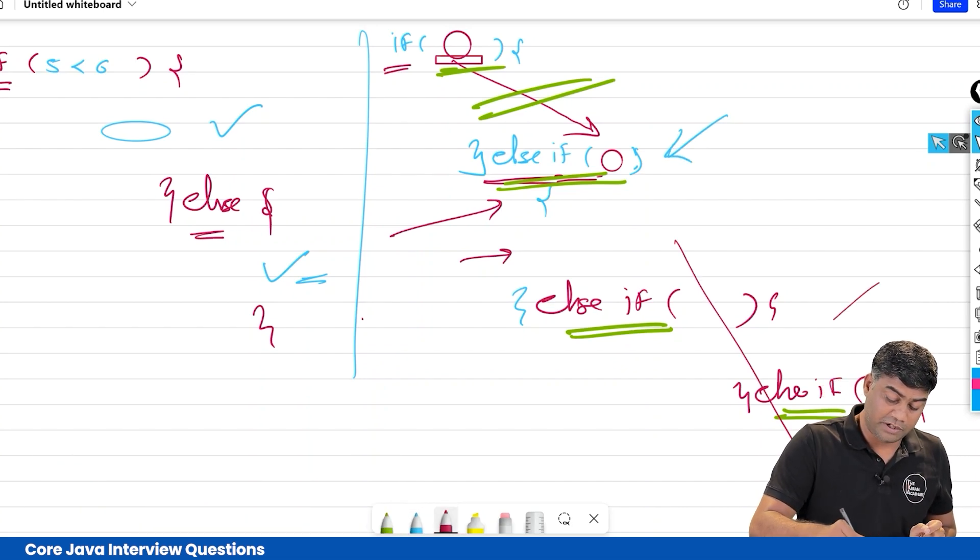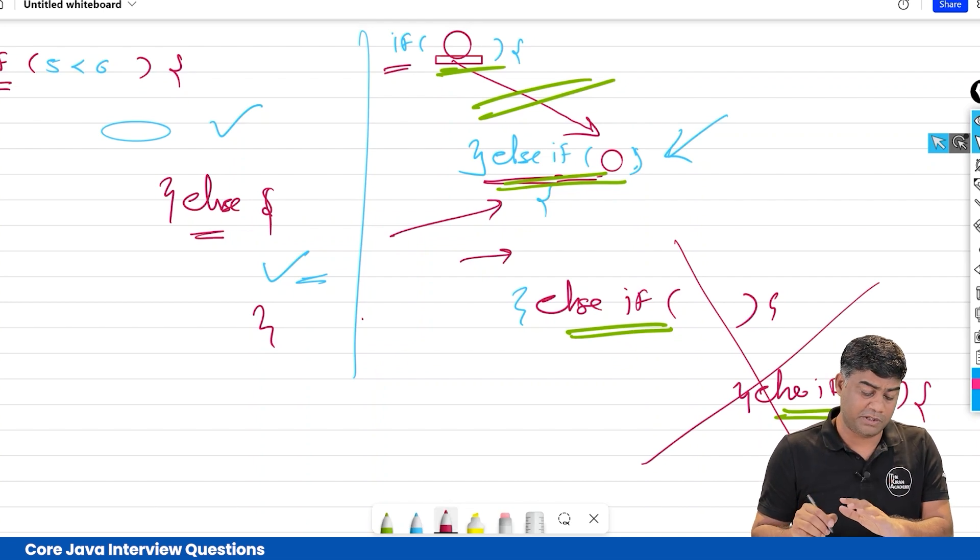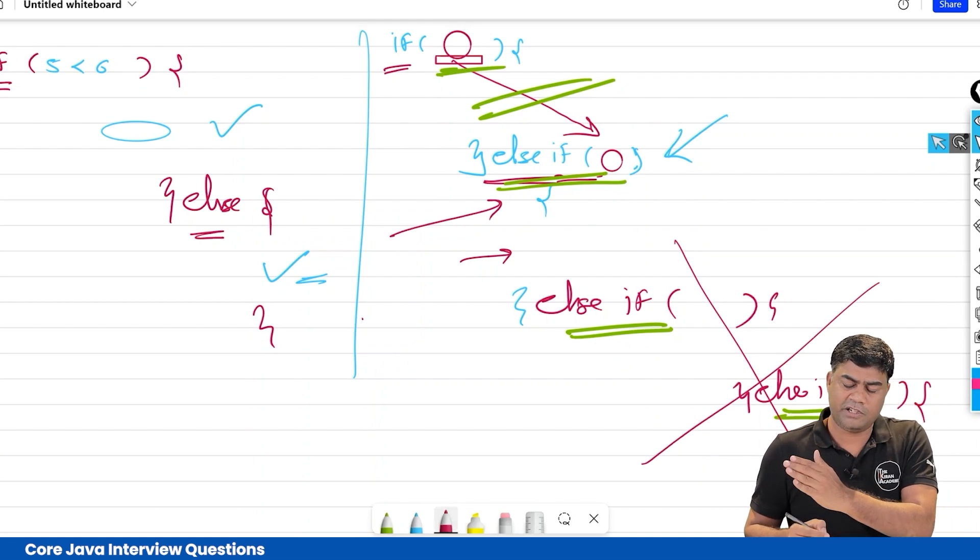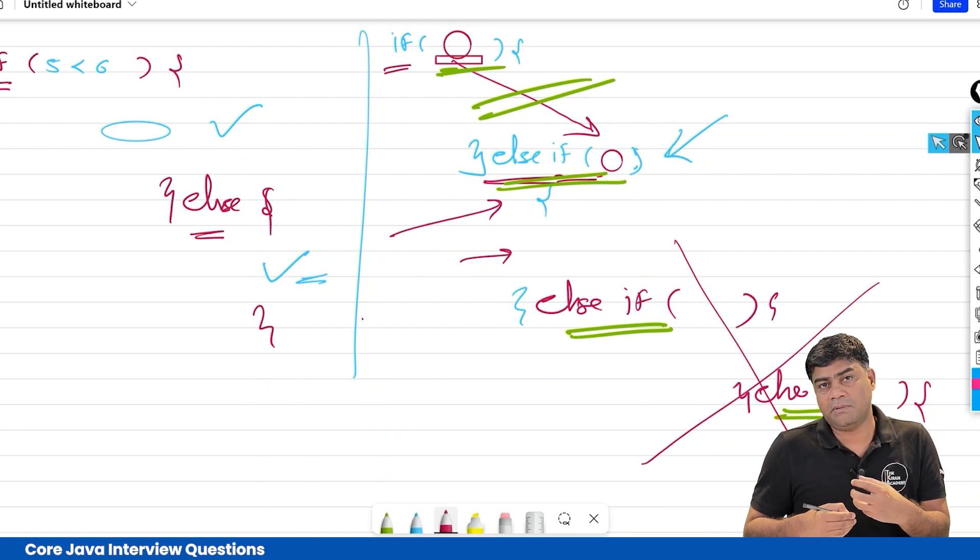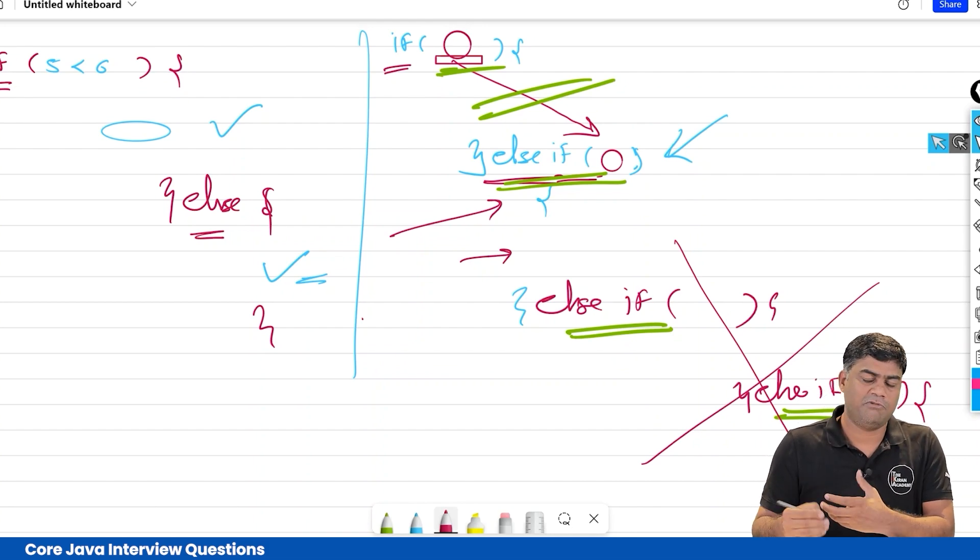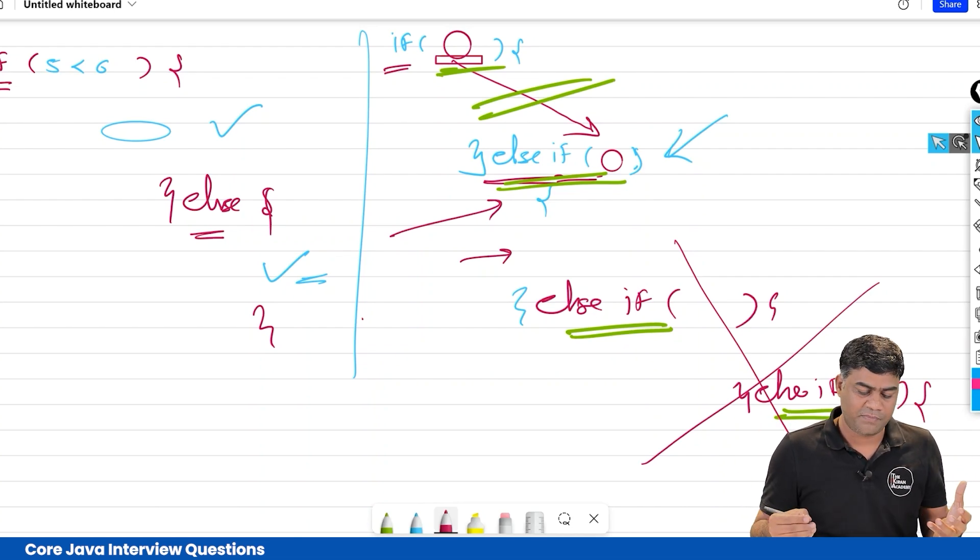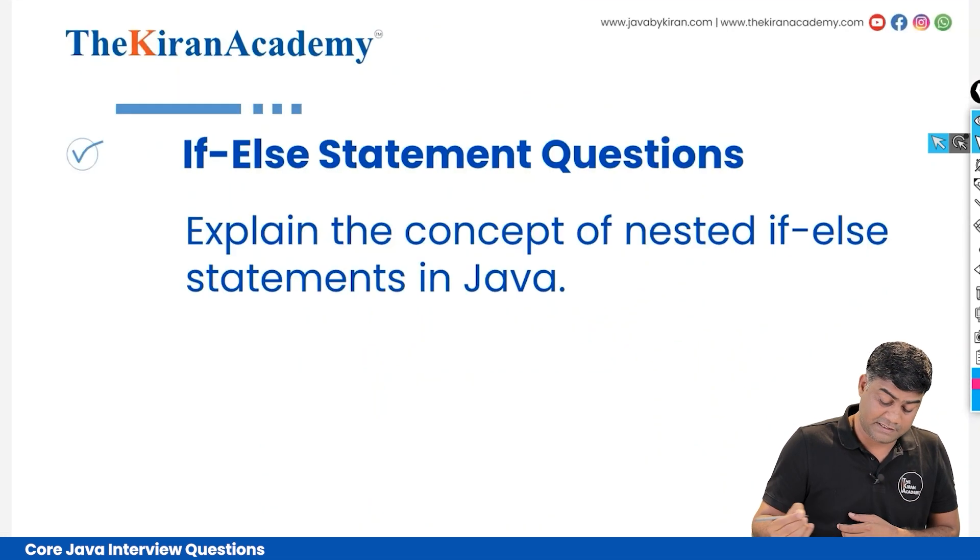It's very simple. Every condition is getting evaluated. This is time consuming also. For overcoming this problem, there is something called switch. We will be seeing that in another video. So this is what nested multiple if-else means.